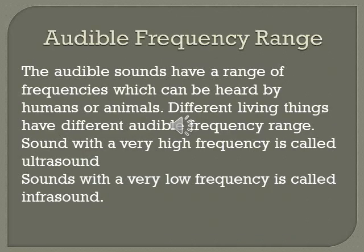Audible frequency ranges. Audible sound refers to the sound we can hear. Audible sound has a range of frequencies which can be heard by animals and human beings. However, audible frequency ranges vary for humans and different species of animals. Different living things have different audible frequency ranges, meaning they cannot hear any sound above or below their particular range. Sound with high frequency is called ultrasound, and sound with low frequency is called infrasound.